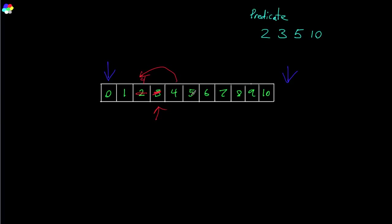Now we go over to 5 — 5 is a destroy candidate, so we get rid of him. We go to 6, do not destroy — move 6 over here. Then 7, move him. 8, move him. 9, move him. 10 — destroy that one. And there you go, you're done. You have run your remove_if.